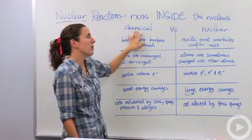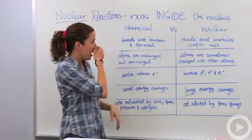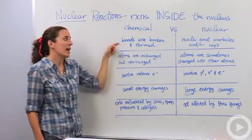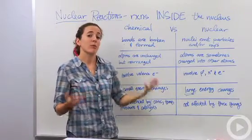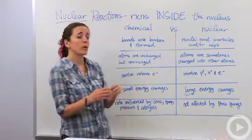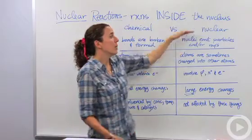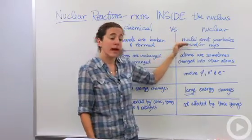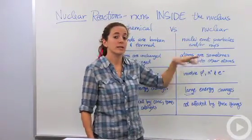So let's talk about some differences between chemical reactions and nuclear reactions. One of the main differences is that in chemical reactions bonds are broken and formed and that's what makes a chemical reaction occur. They're broken and formed between two different atoms. Where in nuclear reactions they are nuclei that emit particles and or rays into the atmosphere around it.